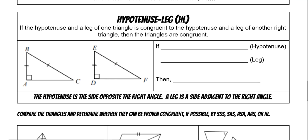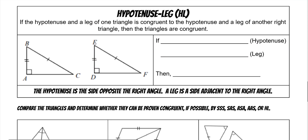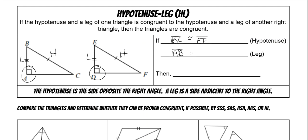Lastly, we have hypotenuse-leg. Whenever this applies, it has to be a right triangle, 100%. You need the hypotenuse of two triangles and a leg of that triangle. So BC is congruent to EF, and AB is congruent to DE. That means the triangles are congruent to each other.